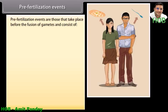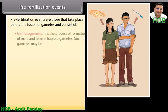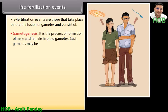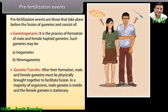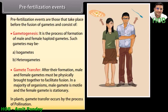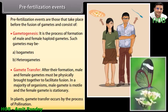Pre-fertilization events are those that take place before the fusion of gametes and consist of gametogenesis — the process of formation of male and female haploid gametes, which may be isogametes or heterogametes — and gamete transfer. After their formation, male and female gametes must be physically brought together to facilitate fusion. In a majority of organisms, the male gamete is motile and the female gamete is stationary. In plants, gamete transfer occurs by the process of pollination.